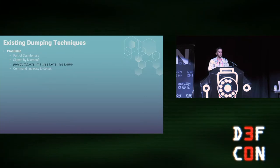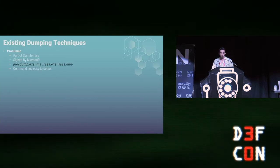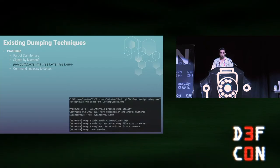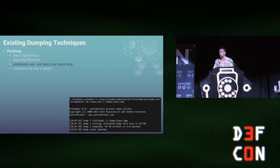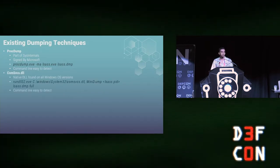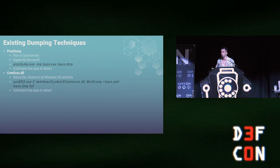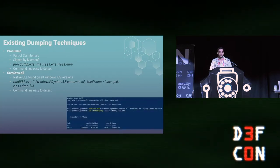Now let's talk about some existing dumping techniques. The first one is using the tool ProcDump, which is part of Sysinternals. It can dump the memory of LSASS with a simple command line, as shown here. Another way is by using the DLL comsvcs.dll — it has an exported function called MiniDump. You can supply the process ID of LSASS to this function and it will do the work for us.